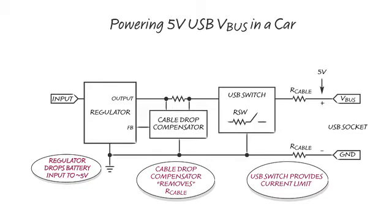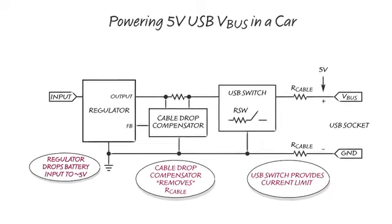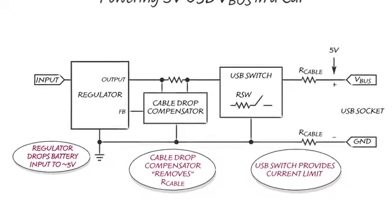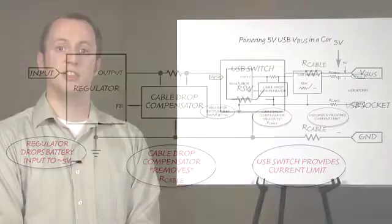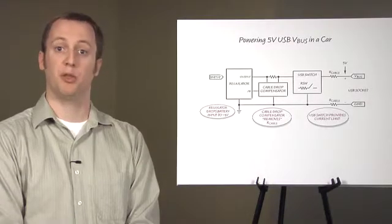Existing solutions to this V-Bus cable resistance problem typically employ a topology such as this. A regulator takes the automotive battery voltage at its input and steps down to 5 volts. Another IC manipulates the regulator to increase the output voltage at high load current, giving the regulator negative output resistance to compensate for the cable resistance. A V-Bus switch provides additional features like output current limit. This solution works well, but takes up to three ICs.